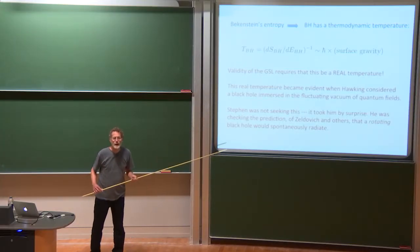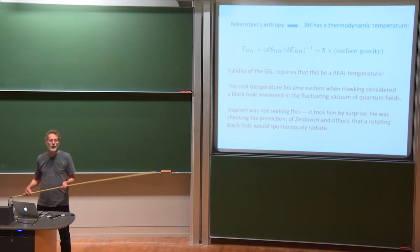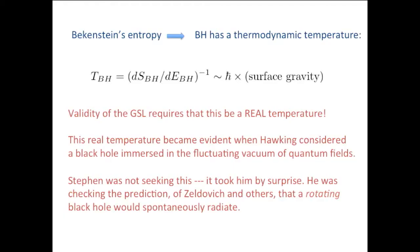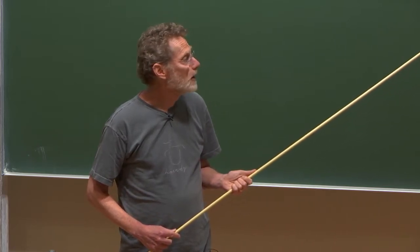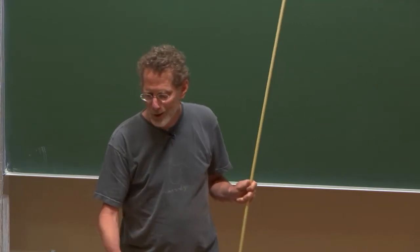And Stephen Hawking did discover that by considering a black hole immersed in the vacuum of quantum fields. But Stephen was not trying to check the generalized second law. He had a totally different agenda at that moment. He was trying to check the prediction of Zeldovich and others that a rotating black hole would spontaneously radiate by a pair creation process and radiate away its angular momentum. But then he discovered by accident this Hawking effect.